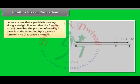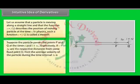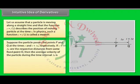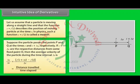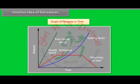Intuitive idea of derivatives: Let us assume that a particle is moving along a straight line and that the function s equals f of t describes the position of a moving particle at time t. In physics, such a function is called a motion. Suppose the particle passes points P and Q at times t and t plus delta t respectively. If s plus delta s are the respective distances from some fixed point O, then the average velocity during the time interval delta t is: delta s by delta t equals f(t + delta t) minus f(t), all divided by delta t, which equals distance travelled divided by time elapsed.